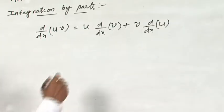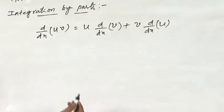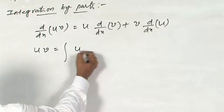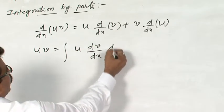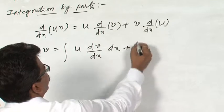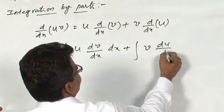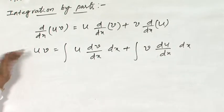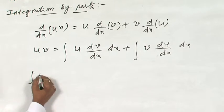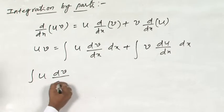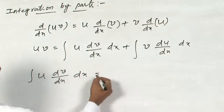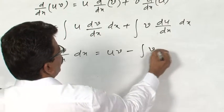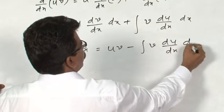Integrating on both sides — since d/dx and integration are inverse processes — you will get u·v = ∫u·(dv/dx)dx + ∫v·(du/dx)dx. This can be rearranged as ∫u·(dv/dx)dx = u·v − ∫v·(du/dx)dx.